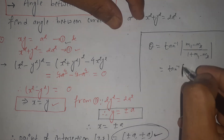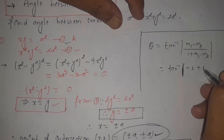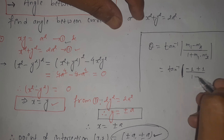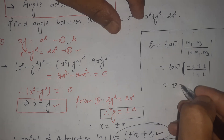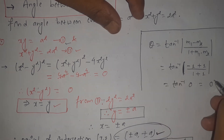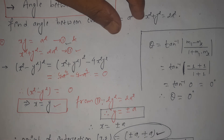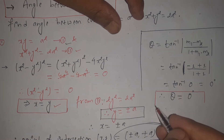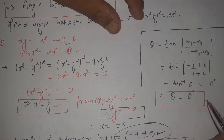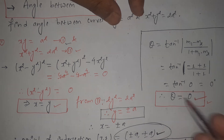Substituting m1 = −1 and m2 = −1 into the formula: θ = tan⁻¹|(−1 − (−1)) / (1 + (−1)(−1))| = tan⁻¹|0 / 2| = tan⁻¹(0) = 0°. Therefore, the angle between the two curves is 0°. The tangents are coincident at the point of intersection, confirming the angle between the curves is 0°.